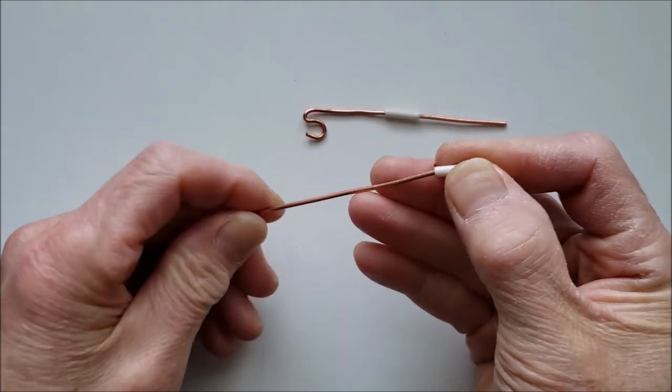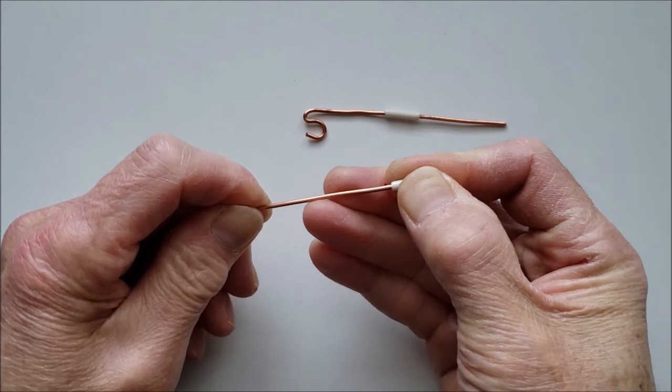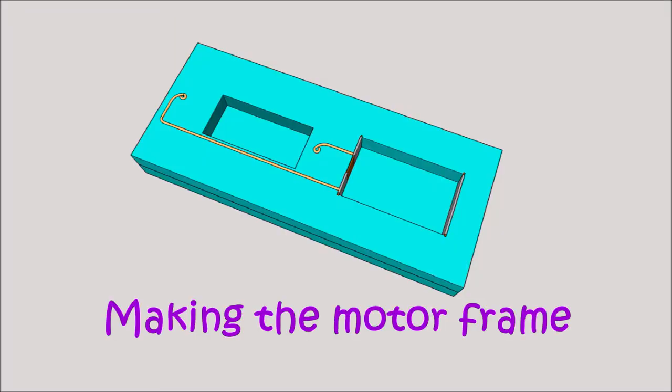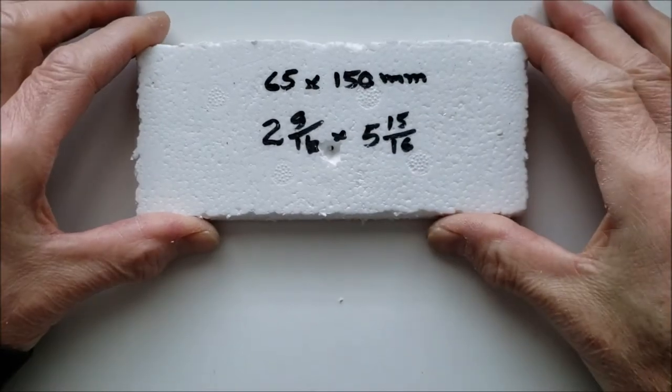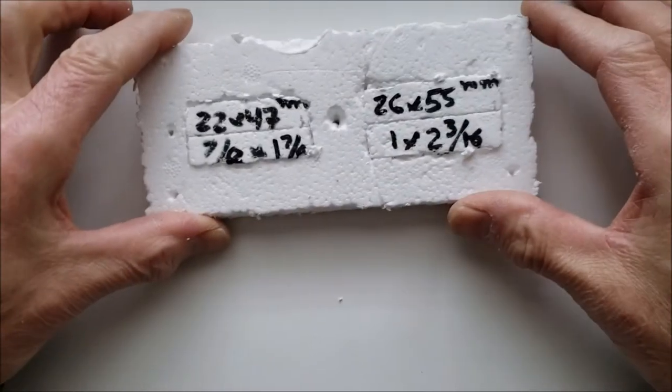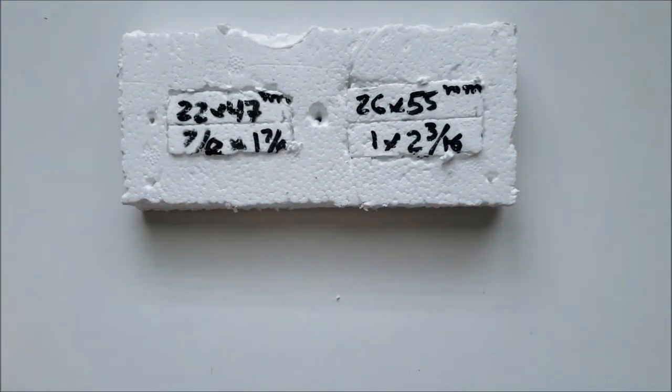Slip pieces of insulation back onto the posts to be used as stoppers. Cut two pieces of one centimeter thick styrofoam as shown. In one of the pieces, cut the openings for the magnet and the batteries.